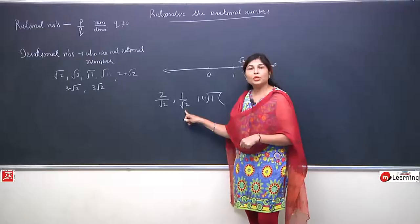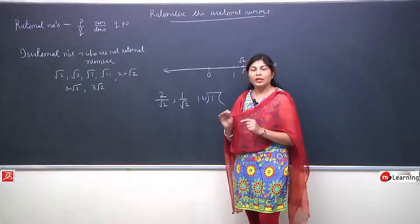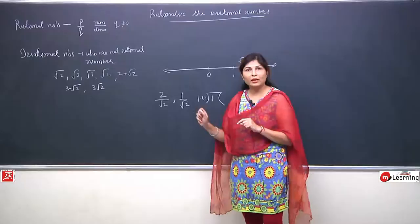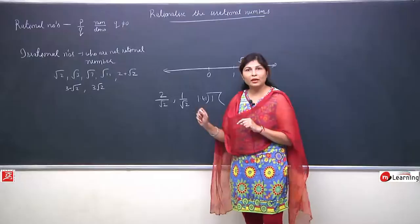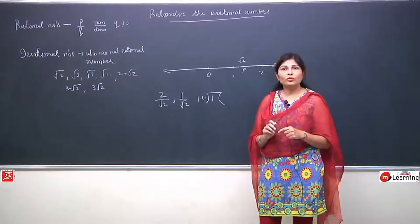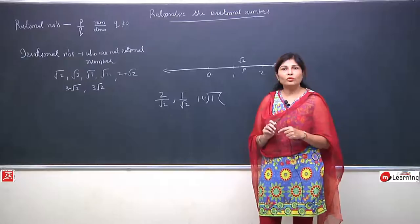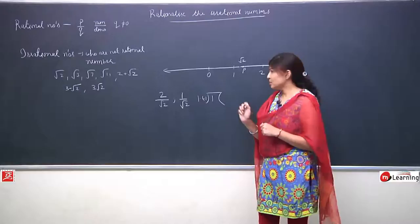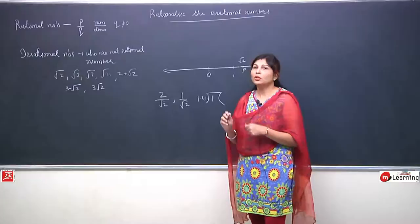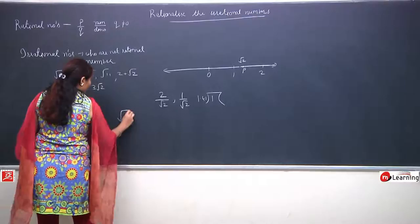What is rationalization? Rationalization means that whatever irrational number is in the denominator, we apply some trick so that it becomes a normal rational number. When it becomes a rational number, plotting it is easier compared to plotting an irrational number. The need of rationalization is to remove roots or irrational numbers from the denominator.